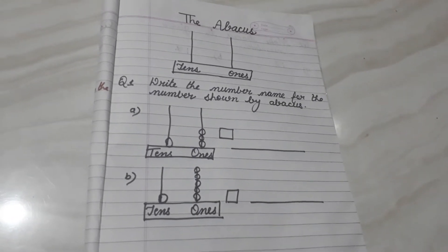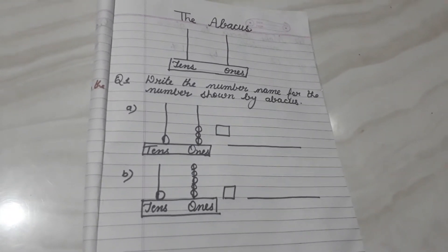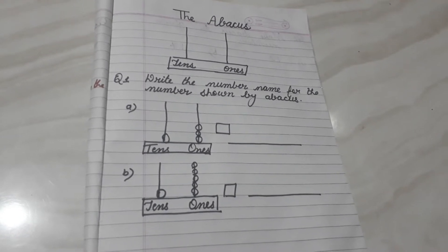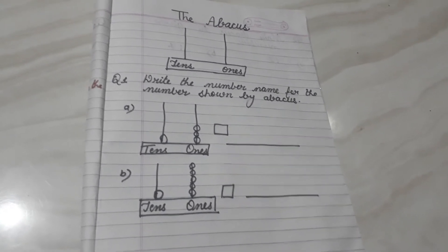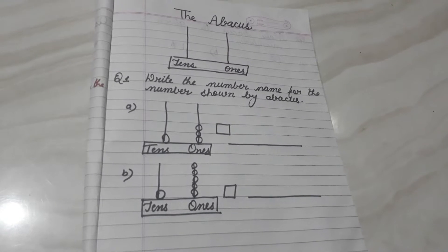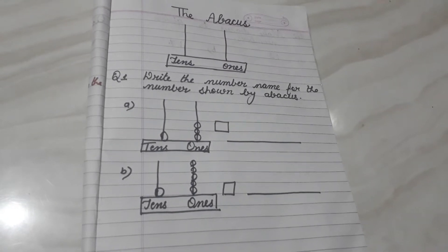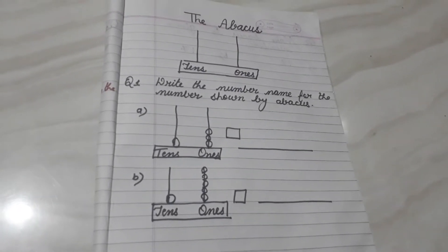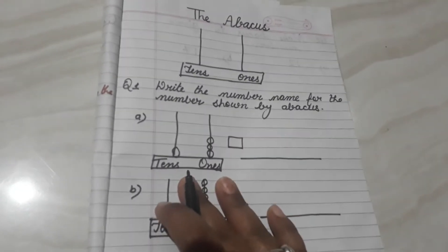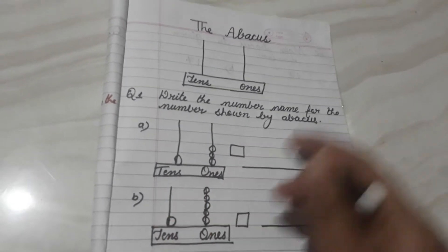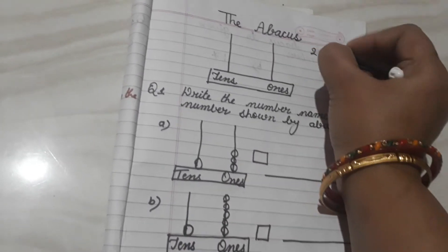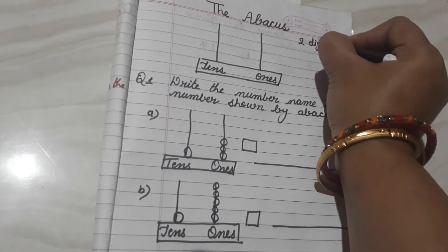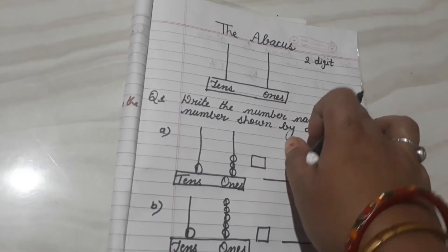Yesterday I explained to you about abacus. Have you done practice? Now, what I told you about abacus, first we will revise it. In the abacus, I explained in class first — I am explaining you two-digit numbers. How many digit numbers? Two digit numbers.